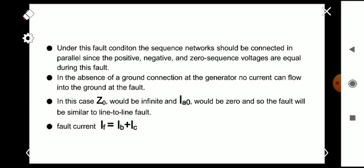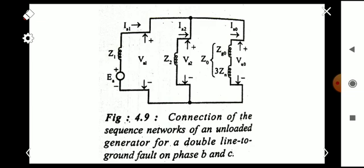The fault current IF equals IB plus IC. To find its value, we use the matrix equation [IA, IB, IC] equals the symmetrical component transformation matrix times [IA0, IA1, IA2]. From this, IB equals IA0 plus a²·IA1 plus a·IA2 and IC equals IA0 plus a·IA1 plus a²·IA2. Adding IB and IC, and factoring out IA1 and IA2, we get IF equals 2·IA0 plus (a + a²)·IA1 plus IA2. This gives the final equation for the fault current.